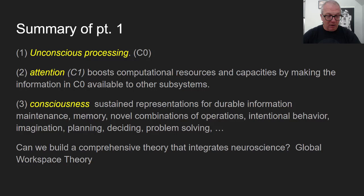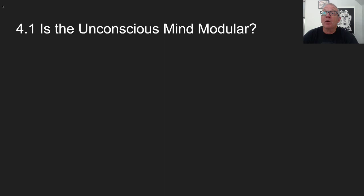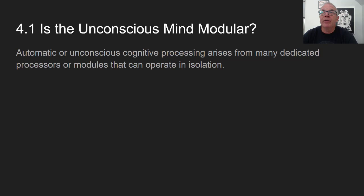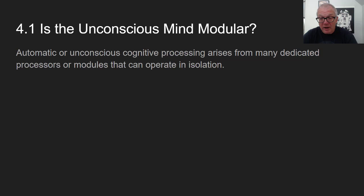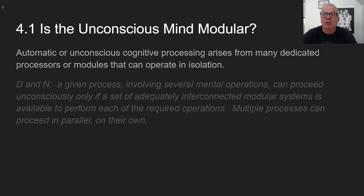Section 4.1 concerns whether the unconscious mind is modular. Global workspace theory will argue that consciousness is not modular. There are automatic or unconscious cognitive processes that arise from many dedicated processors or modules that operate in isolation — lots of cognitive work gets done at the low level that is modular — but in some important philosophical ways, consciousness is not going to be modular.